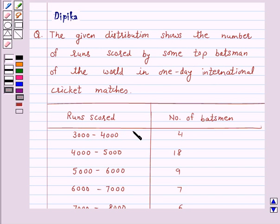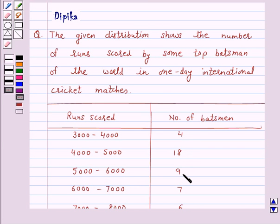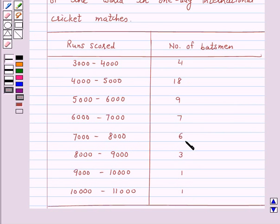Runs scored 3000 to 4000: number of batsmen is 4. Runs scored 4000 to 5000: number of batsmen is 18. For 5000 to 6000 it is 9. For 6000 to 7000 it is 7. For 7000 to 8000 it is 6. For 8000 to 9000 it is 3. For 9000 to 10000 it is 1. For 10000 to 11000 it is 1.